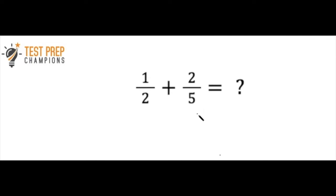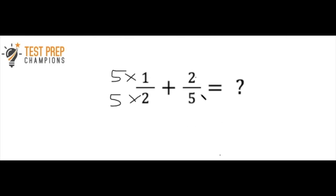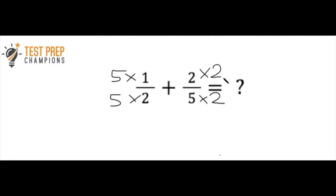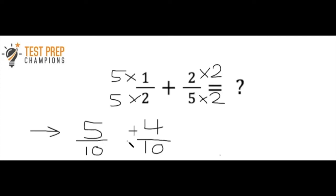The first step when adding or subtracting fractions: are the denominators the same? The denominator is the lower number of the fraction — in this case they're not the same. Since two cannot multiply to give us five, we use the cross-multiplication approach. We multiply the top and bottom of the first fraction by five, giving us five over ten. Then we multiply the top and bottom of the second fraction by two, giving us four over ten. Rewriting: five over ten plus four over ten.